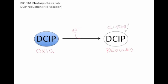So if there's electrons around, the DCIP is going to go from blue to clear. And we can watch that happening using the spectrophotometer.